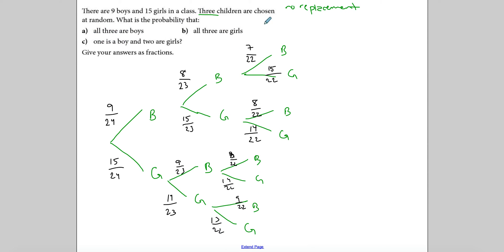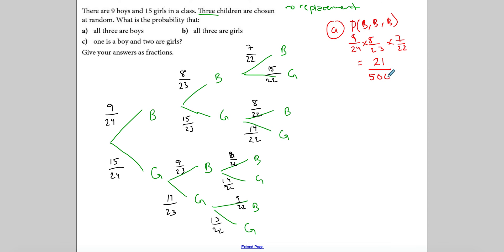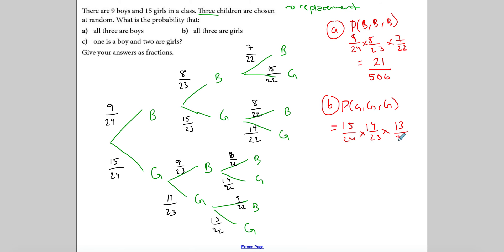For part a, all boys: multiply along the first branch — 9/24 × 8/23 × 7/22 = 21/506 in simplest form. You don't even need the tree for this one. For part b, all three girls: 15/24 × 14/23 × 13/22 = 455/2024. Multiply along the all-girls branch.